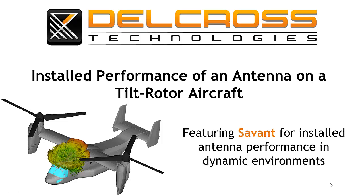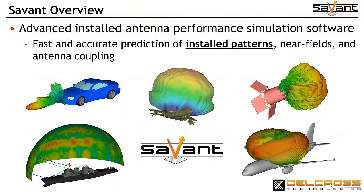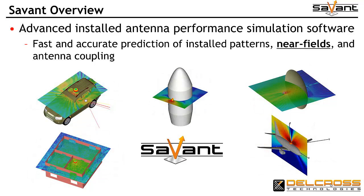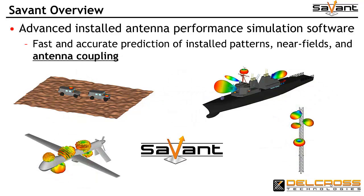In this presentation, we study the installed performance of a microwave antenna on a tilt-rotor aircraft, utilizing the Delcross Savant software. Savant is a commercial electromagnetic analysis software aimed at solving electrically large problems using modest computer systems. It is geared toward analysis of installed antenna patterns, near-field radiation modeling, and accurate prediction of antenna-to-antenna coupling for application geometries on the order of hundreds or thousands of wavelengths in size.